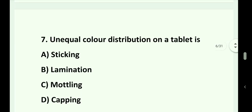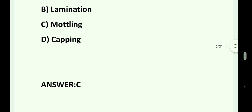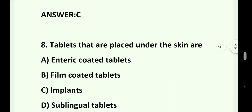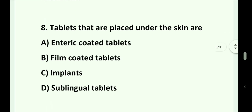Question number 7. An unequal color distribution on a tablet is: Option A. Sticking. Option B. Lamination. Option C. Mottling. Option D. Capping. Answer is Option C. Mottling.